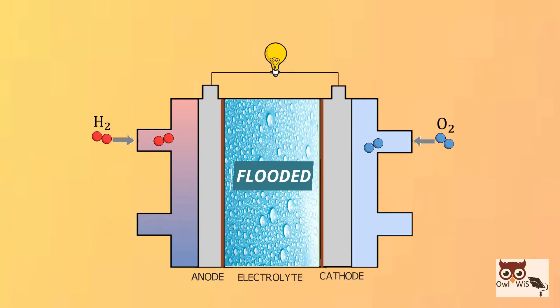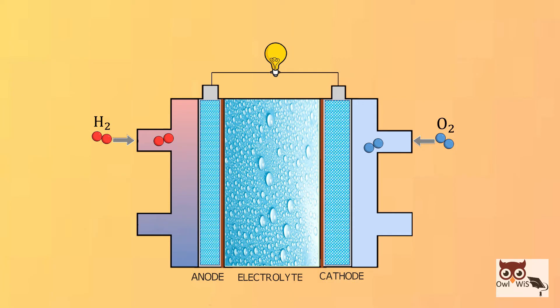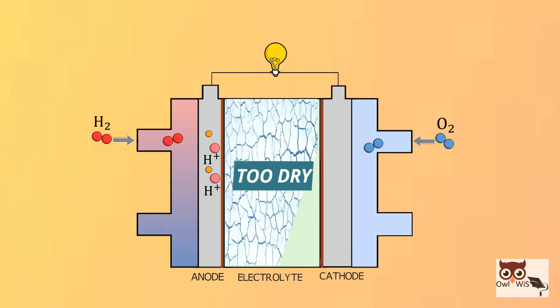If it is too wet, flooded, the pores of the diffusion layer will be blocked and the reactant gases will not be able to reach the catalyst. If the membrane is too dry, there will not be enough acid ions to carry the protons.